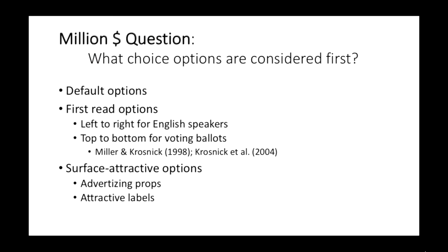What other answers are there to the million dollar question of which choice options are considered first? One answer has to do with reading order — left to right for English speakers. We know from political science that varying candidate position on a voting ballot makes a significant difference in elections. A third answer has to do with how surface-attractive the options are — that's why advertising uses shiny, attractive images next to the option we want people to buy.